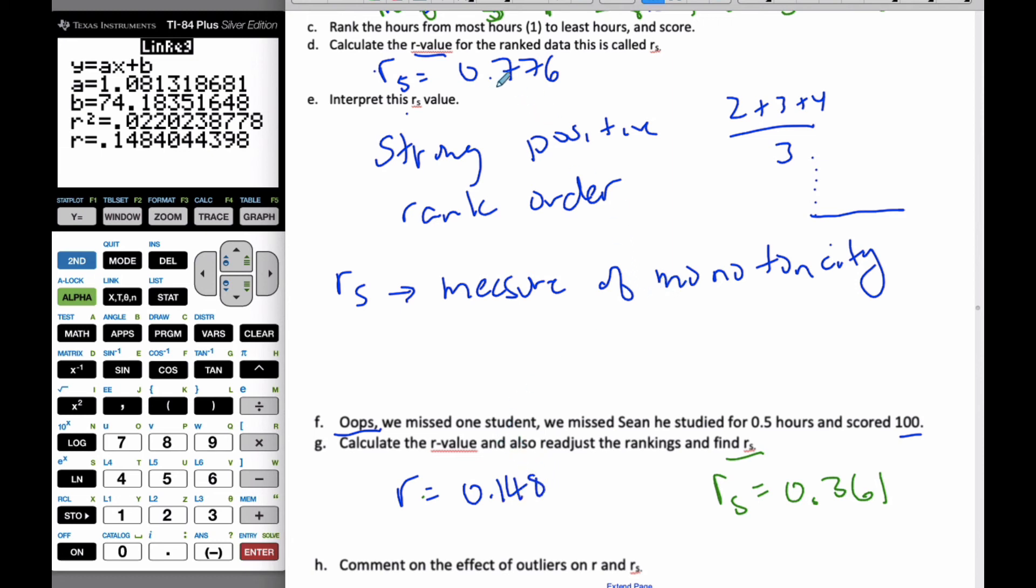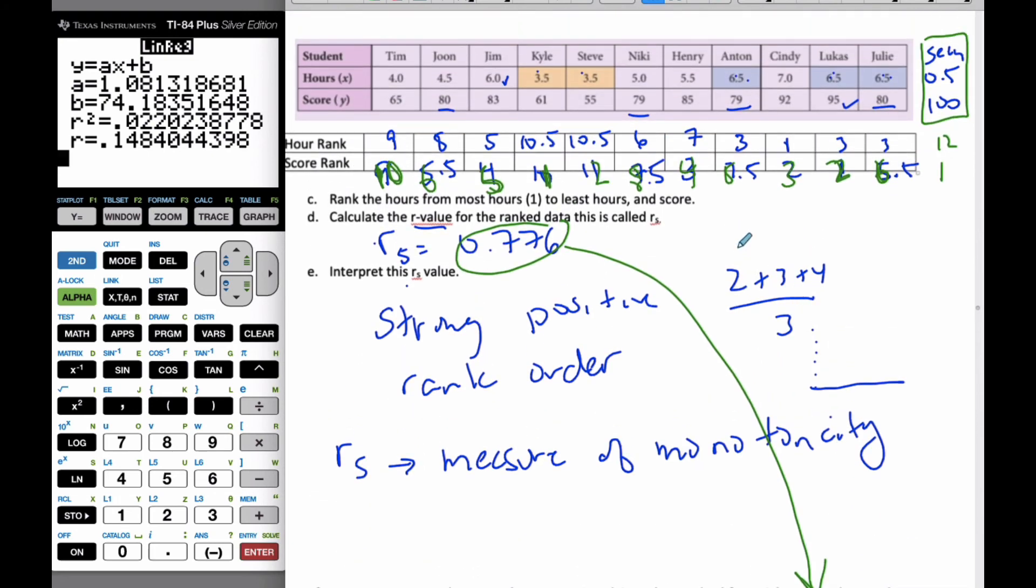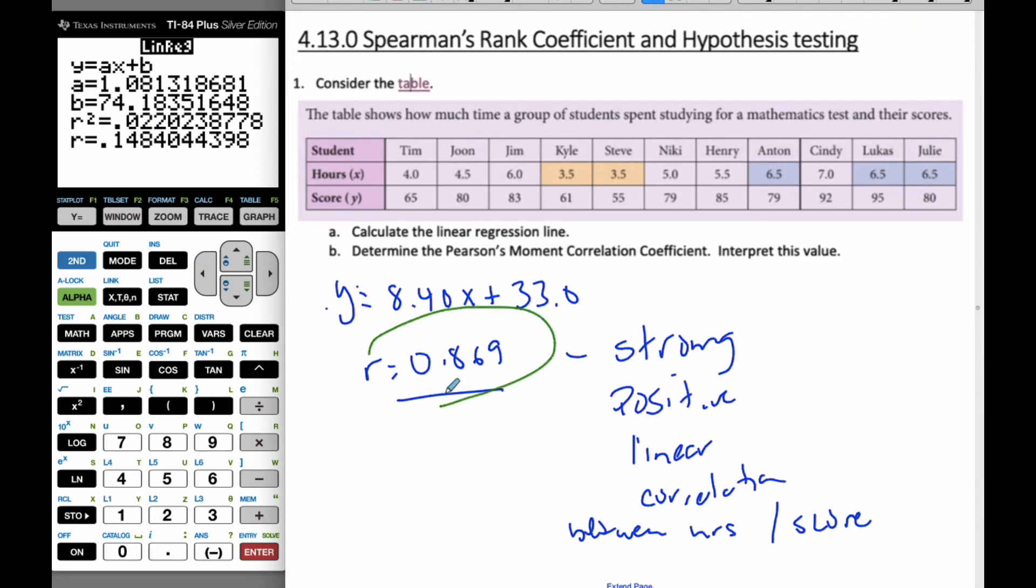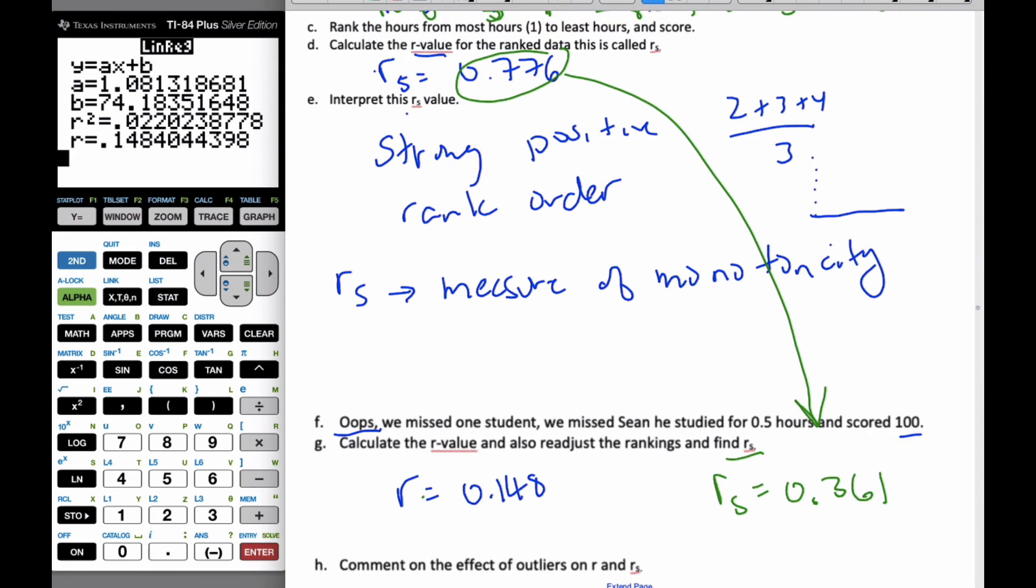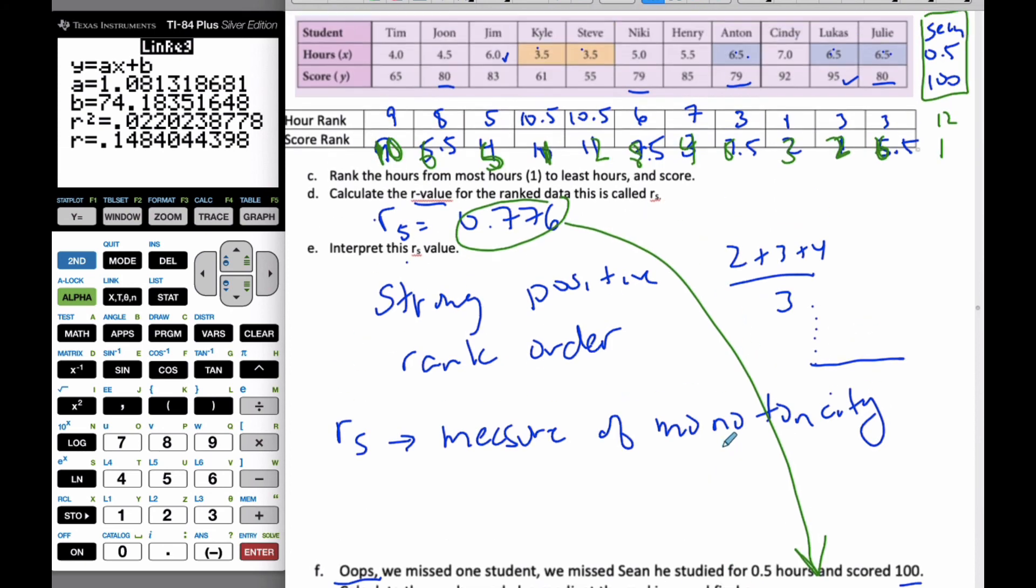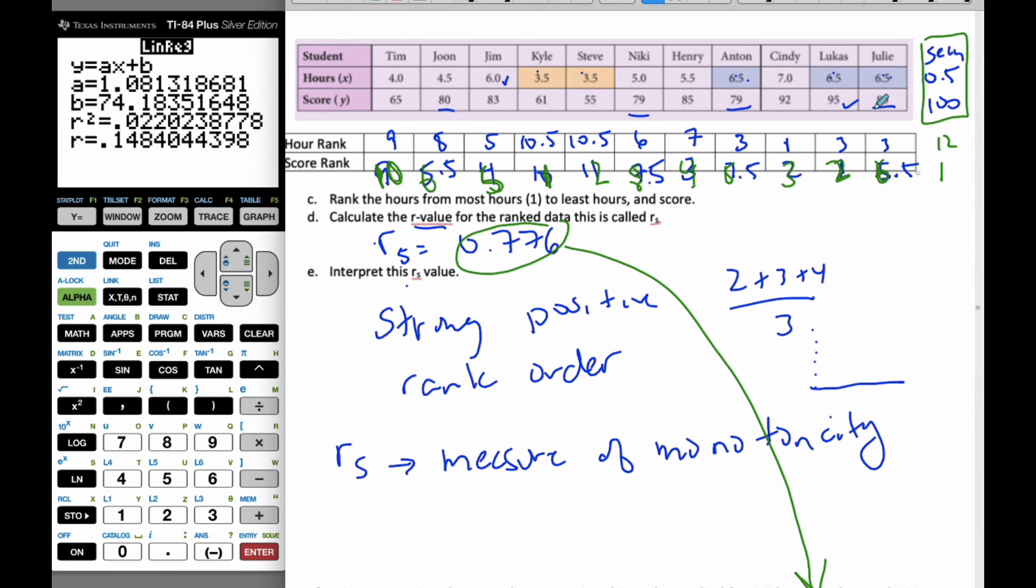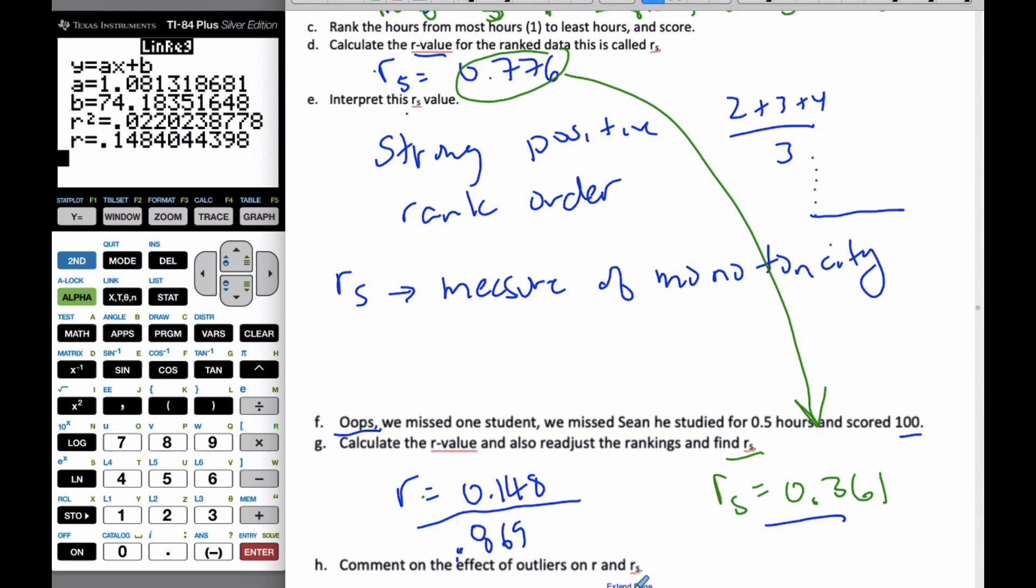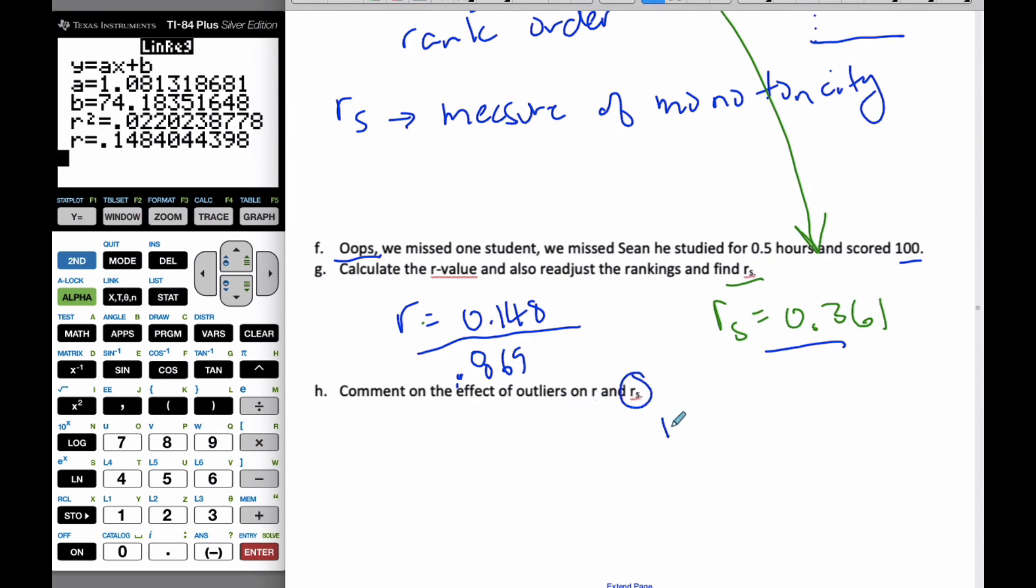Spearman's changed from 0.8 to 0.4, whereas the R coefficient, the original one was 0.869. What I can see is that the Pearson's coefficient is very much more affected by outliers than this Spearman's rank coefficient. Because Sean is definitely an outlier, he doesn't study at all and he gets a crazy high score. He's like the antithesis of the overall pattern. The Spearman's is less affected by outliers.